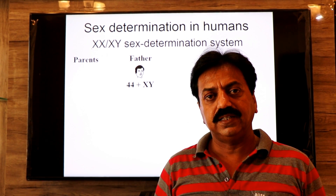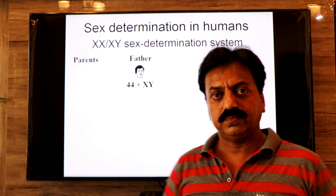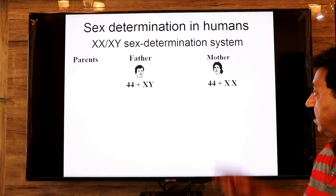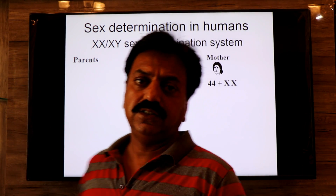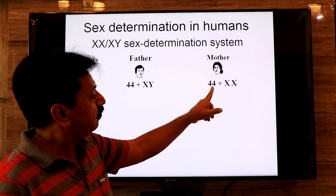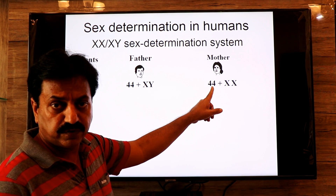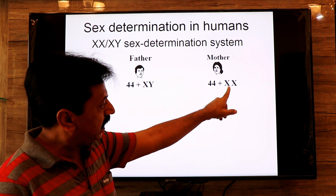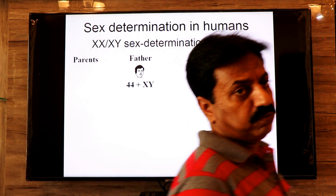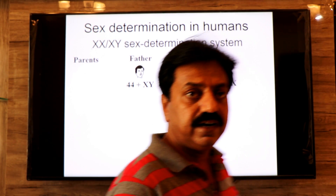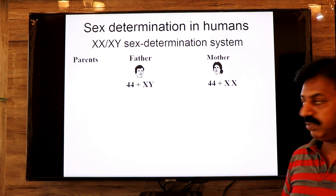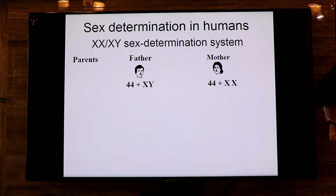The mother is also a diploid individual having 46 chromosomes — 44 autosomes in 22 pairs, and the 23rd pair consists of two sex chromosomes, both being X chromosomes. The male produces male gametes called sperm, and the female produces female gametes called ova.